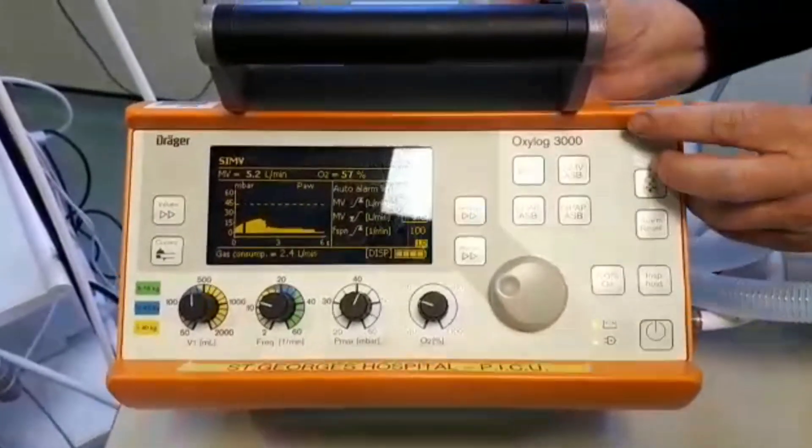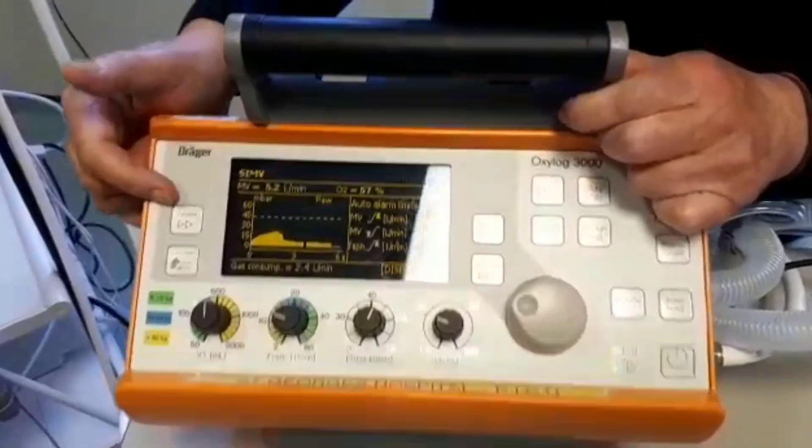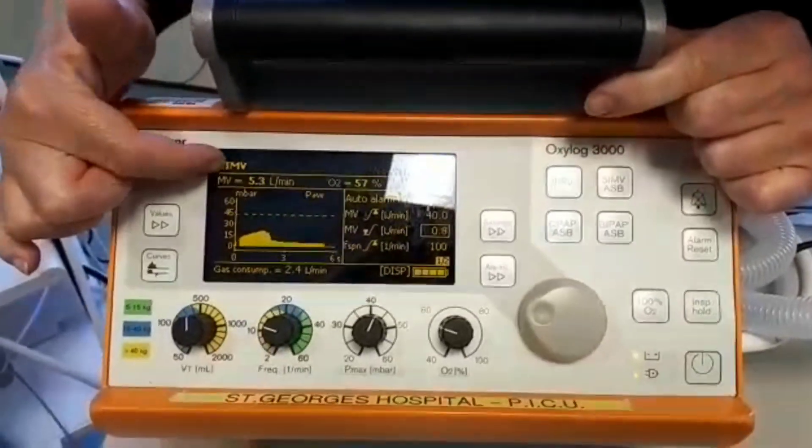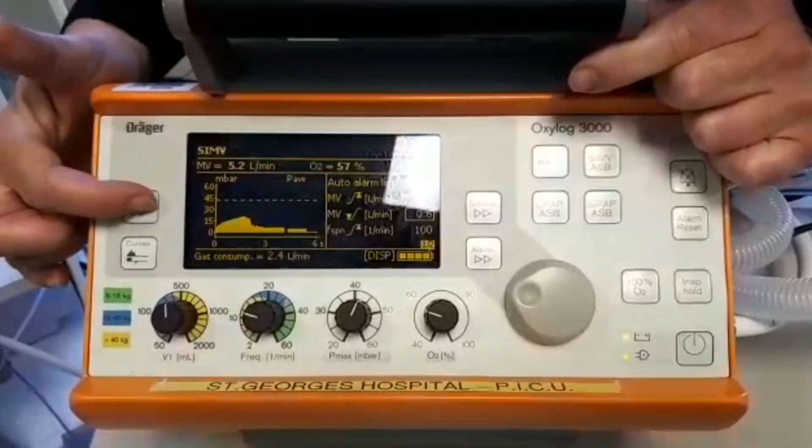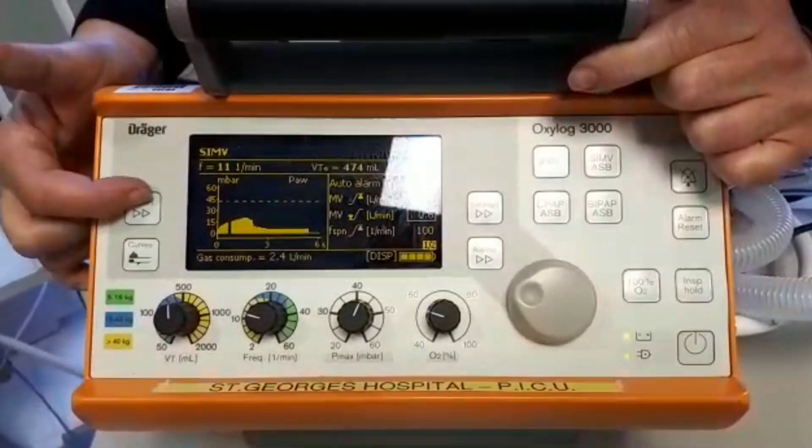Over this side, we have our values button which will display our delivered parameters here. You can only see two at a time, so you need to press the values button to see more.